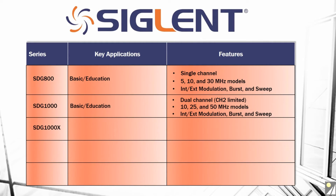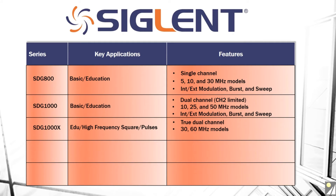Now let's move to the SDG1000X series, which is one of our newer platforms. This is more of a high frequency square or pulse wave application focus, and it is a true dual channel instrument, so both channels are identical as far as their output and function capabilities. We have 30 and 60 MHz models. Where this instrument stands out is that the square max frequency is identical to the sine max frequency. So in the 30 MHz model, you have 30 MHz sine wave maximum and 30 MHz square wave maximum, which is helpful if you are going to be doing pulsing or high frequency square waves.